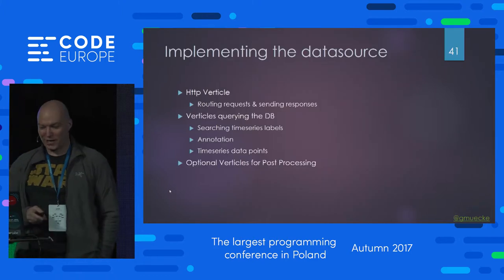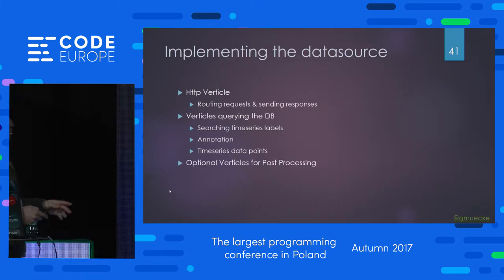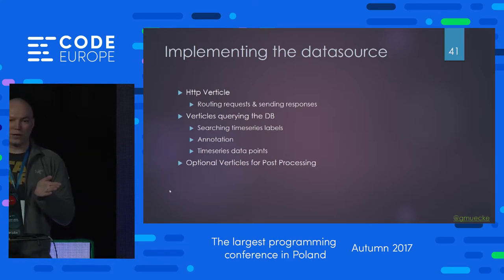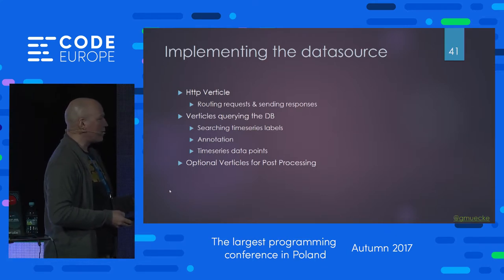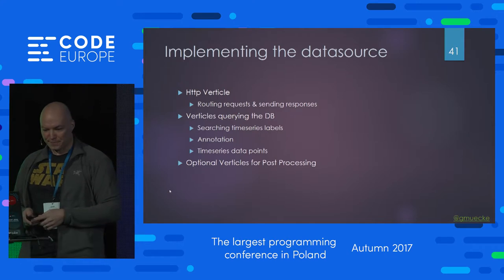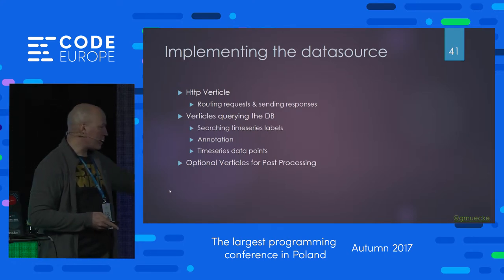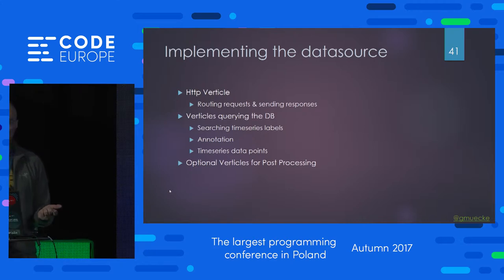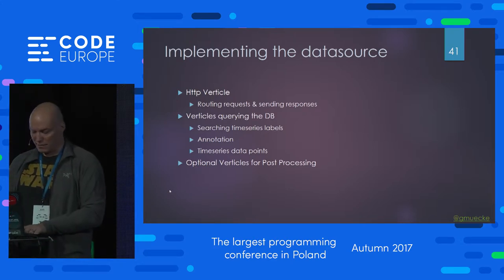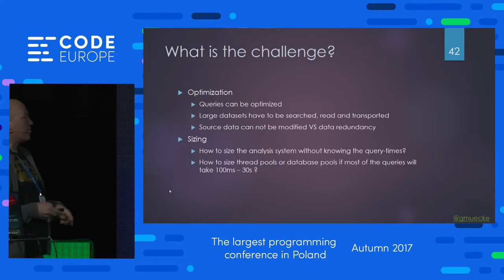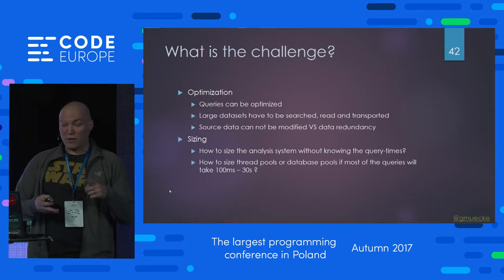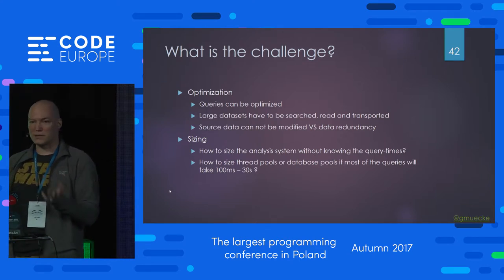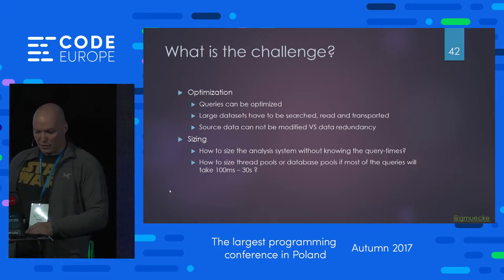Now we start with the data source. Back to our initial problem: we need an HTTP verticle that provides our endpoints receiving HTTP requests, and routes them to one of the processing verticles. We need one that queries the database — for searching time series labels and annotations, and most importantly for the actual time series data. Optionally, you can do post-processing with dedicated verticles for computational tasks. The challenge is optimization: searching large data sets, reading and transporting them, and limiting the data in transportation to keep pressure on resources low.